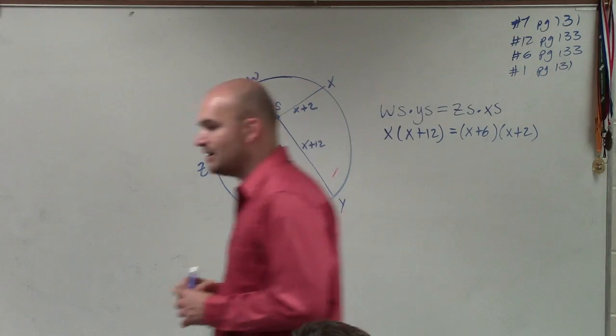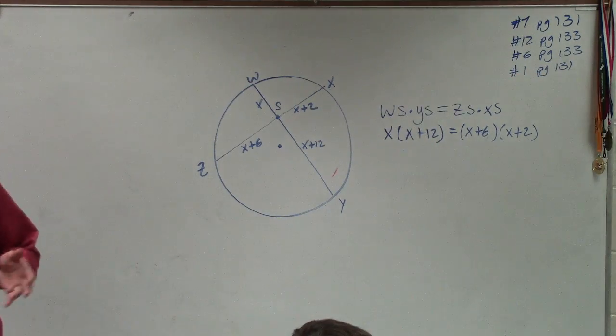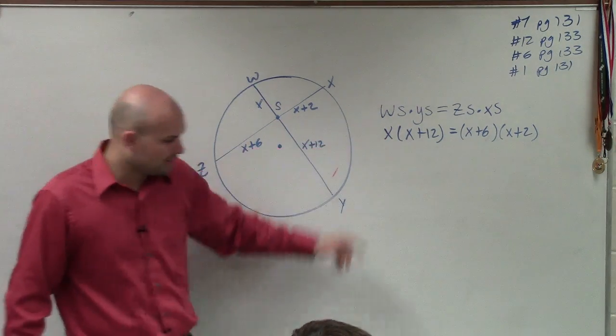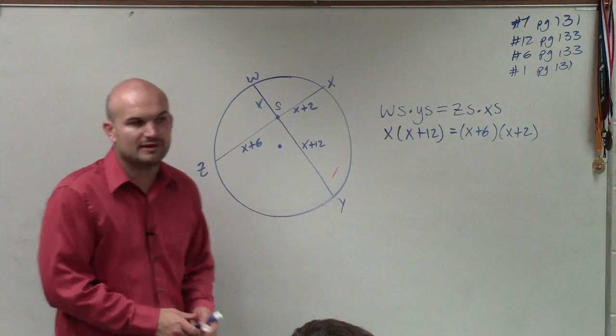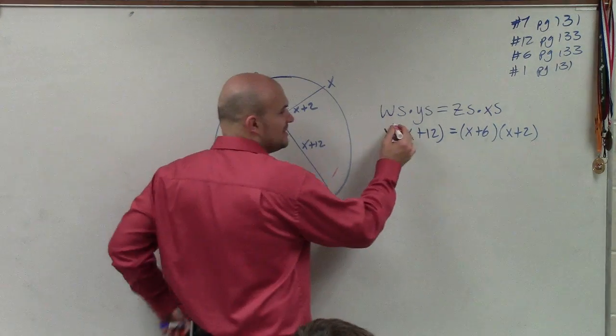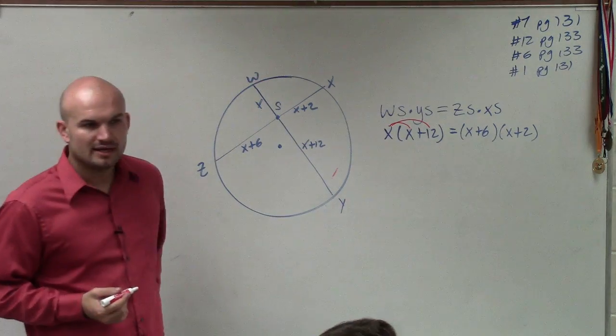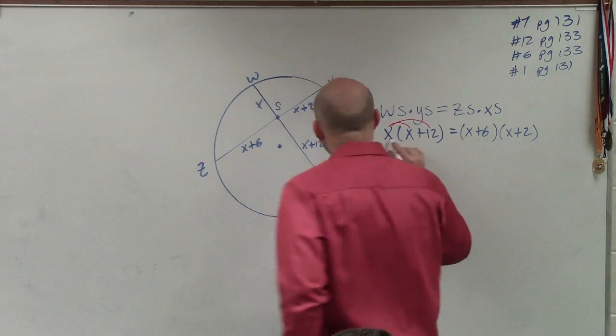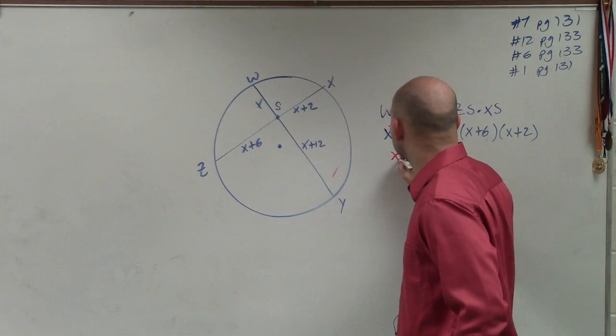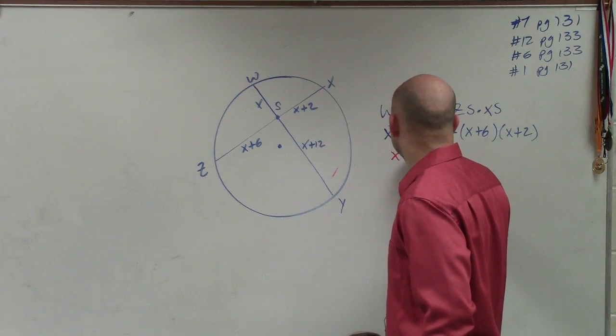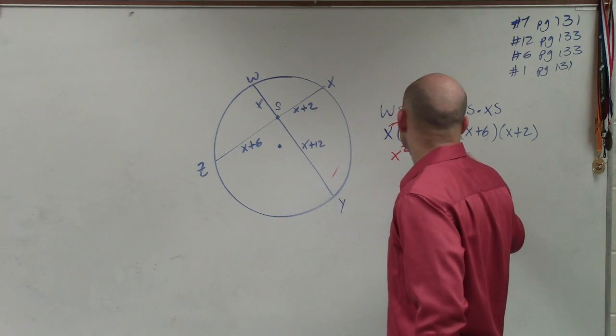Now, ladies and gentlemen, when you have an expression multiplied by a binomial, we have to make sure you apply distributive property. That means that this x, I'm going to multiply times both terms inside. So therefore, x times x is not 2x, it's x squared. x times 12 is equal to a positive 12x.